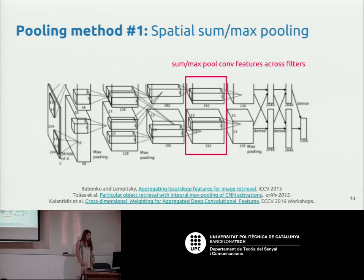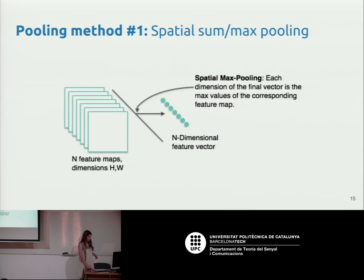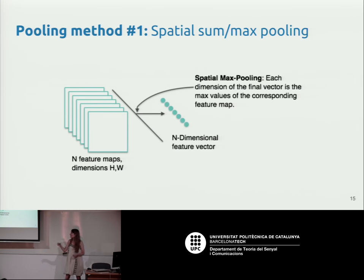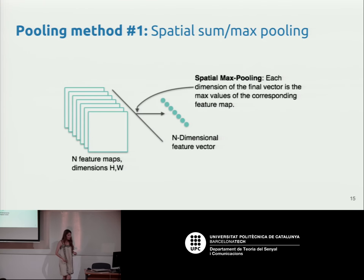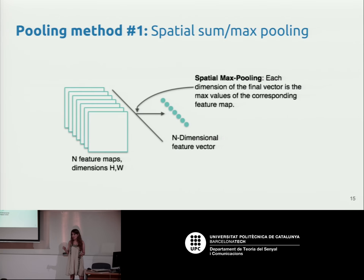Back in 2015, quite a number of approaches were proposed. The simplest is: you have your tensor in the convolutional layer and you just do max pooling or sum pooling across the different channels. You have a volume in a convolutional layer — a number of different feature maps — and you compute the max or the sum within each map. That pools the tensor from H×W×D down to a single D-dimensional vector. Using something like VGG and working with the top convolutional layer, you represent the image with just 512 dimensions.